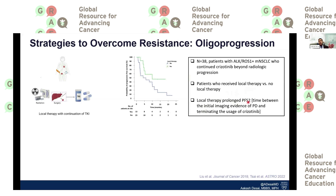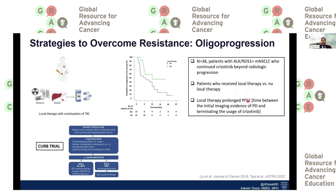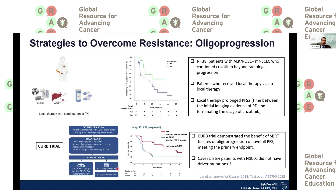PFS2 is defined as time from initial imaging evidence of progressive disease to termination of frontline therapy — essentially trying to increase the mileage from the frontline therapy by using local therapy for oligometastatic disease. More recently, the CURB trial was presented, including patients with both metastatic non-small cell lung cancer and breast cancer, randomized to standard of care without radiation versus standard of care with radiation to all progressive sites.